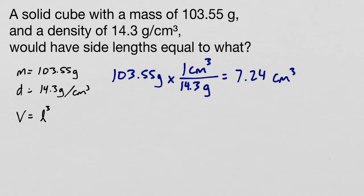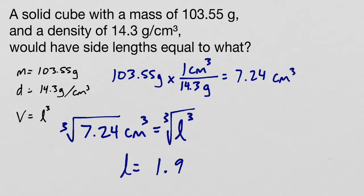Now that we know our volume, we can plug that right into our volume equation which says that our volume is equal to the length cubed. To get our length here, we need to take the cubed root of each side, and if we do that we get that l is equal to 1.93 centimeters.